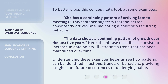To better grasp this concept, let's look at some examples. "She has a continuing pattern of arriving late to meetings." This sentence suggests that the person consistently arrives late, indicating a habit or a recurring behavior. "The data shows a continuing pattern of growth over the last five years." Here, the phrase describes a consistent increase in data points, illustrating a trend that has been maintained over time.